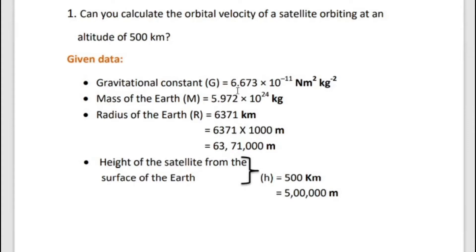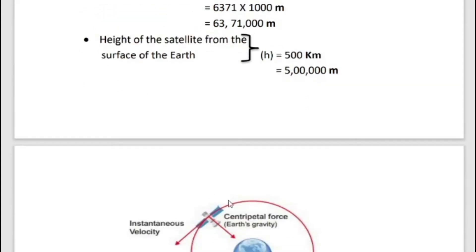We know the gravitational constant value: G = 6.673 × 10⁻¹¹ N·m²·kg⁻². Mass of the Earth M = 5.972 × 10²⁴ kg. Radius of the Earth R = 6,371 km. In meter form, 6,371 km = 6,371,000 m, since 1 km = 1,000 m. Then the height of the satellite from the surface of the Earth...